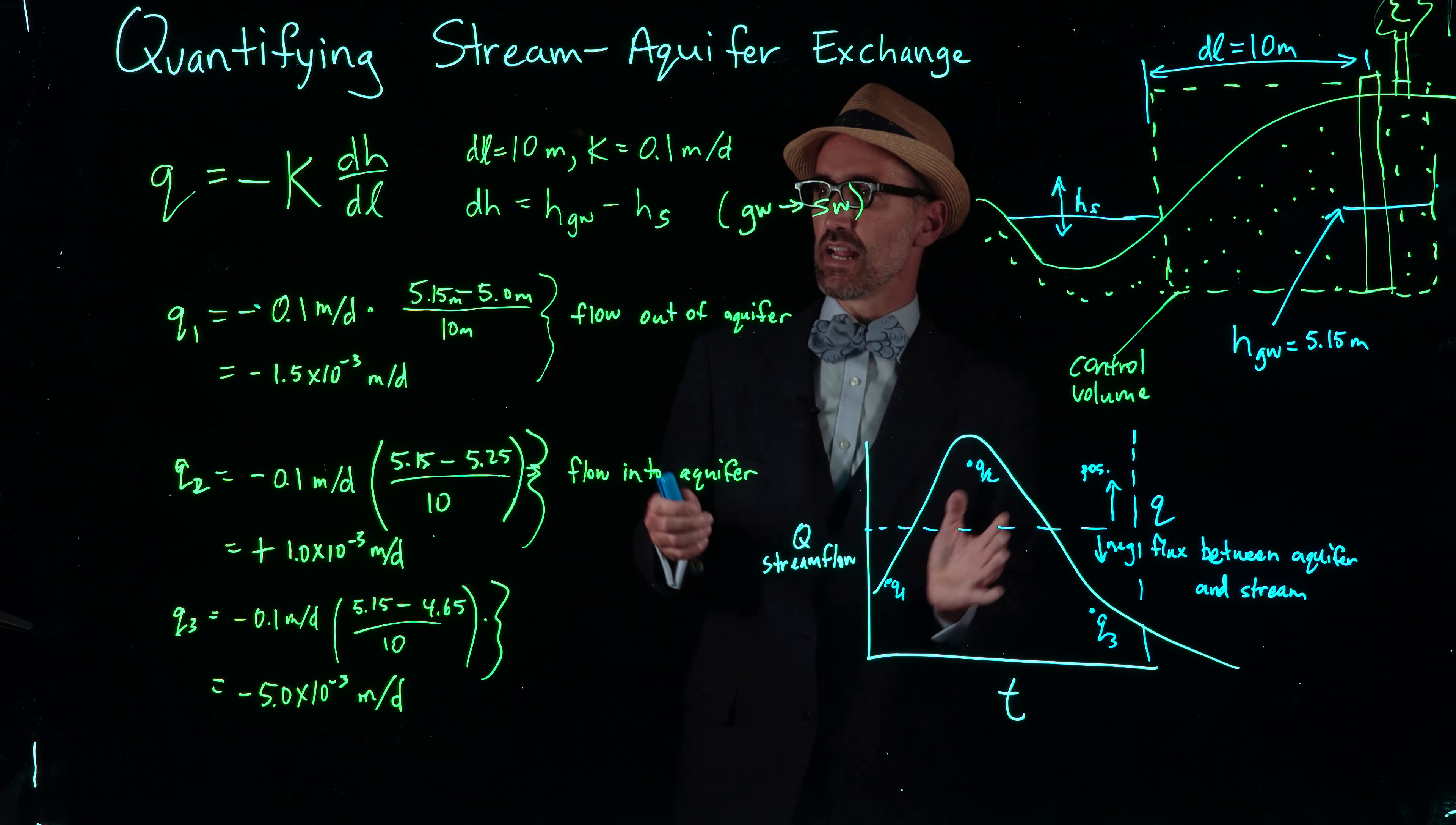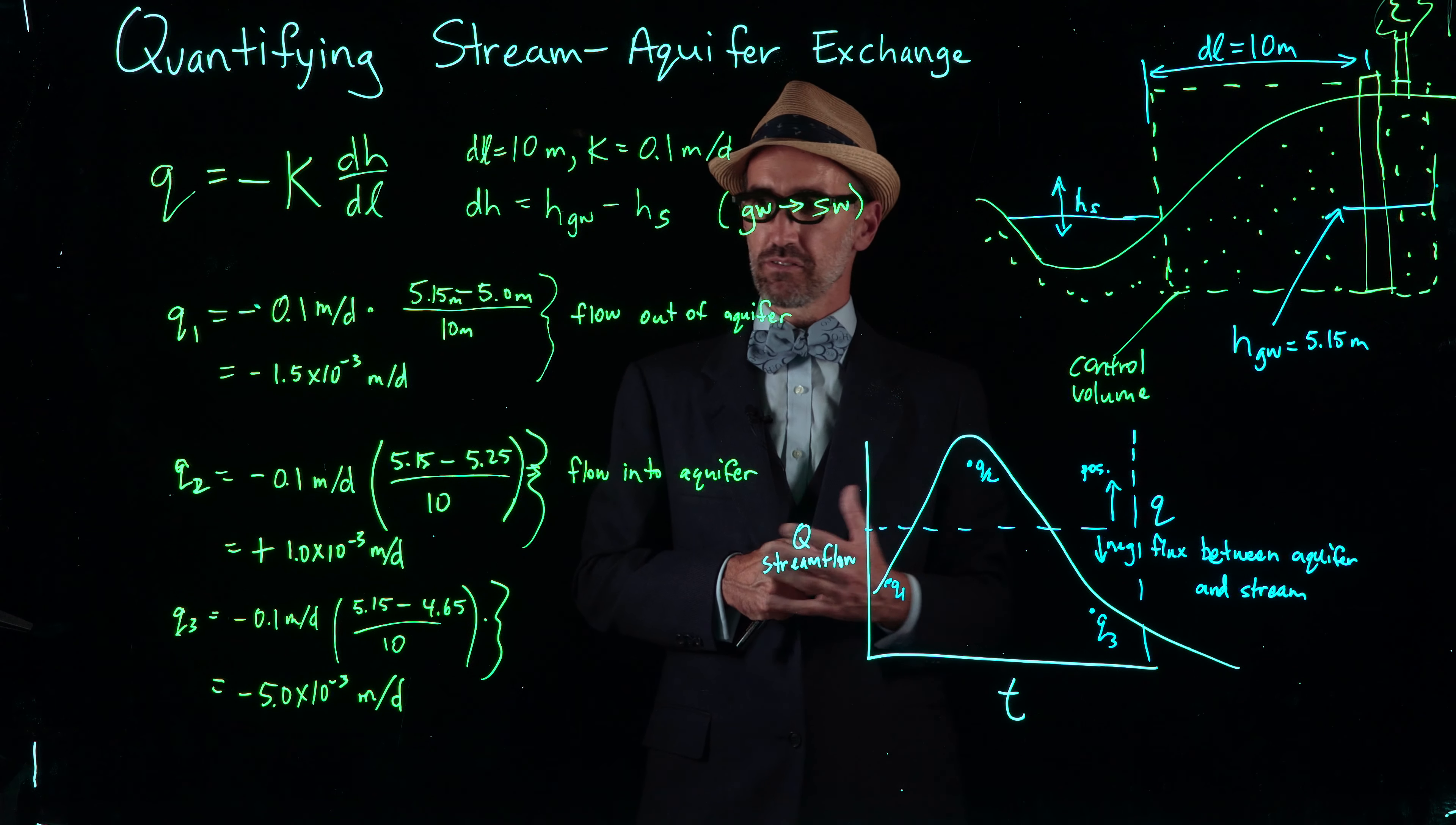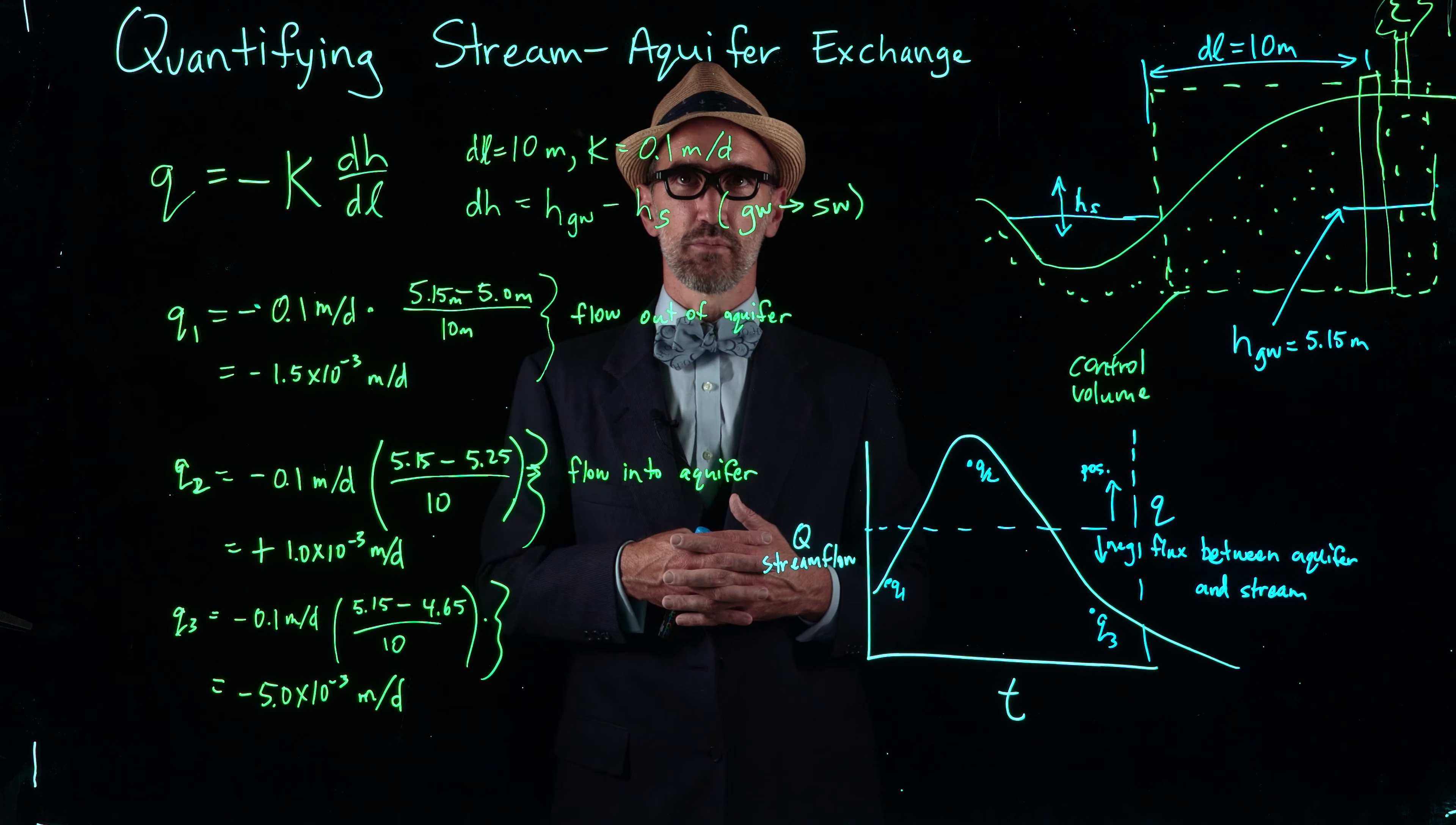With that, you can now understand when is a good time possibly for fishing for salmon who like cold groundwater coming into a stream. You can calculate, in general, the flux between streams and aquifers, which are important for a number of water resource problems.